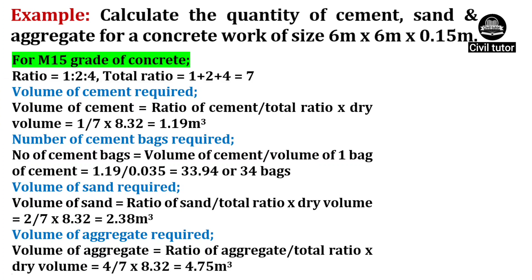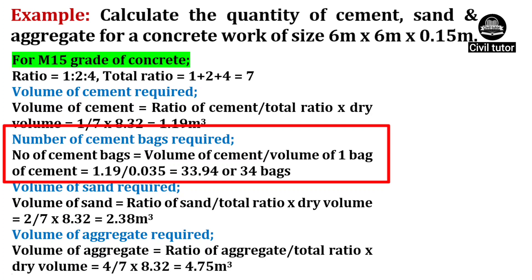The number of cement bags required will be equal to volume of cement upon volume of one bag of cement. As the volume of cement is calculated as 1.19 and volume of one bag of cement is 0.035, on substituting these values, the number of cement bags will be equal to 34 bags.